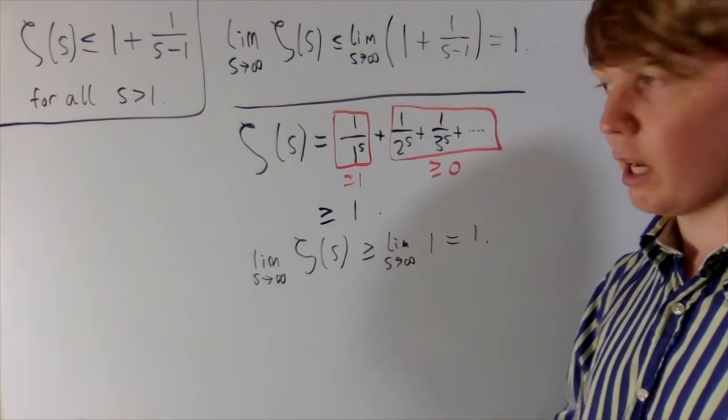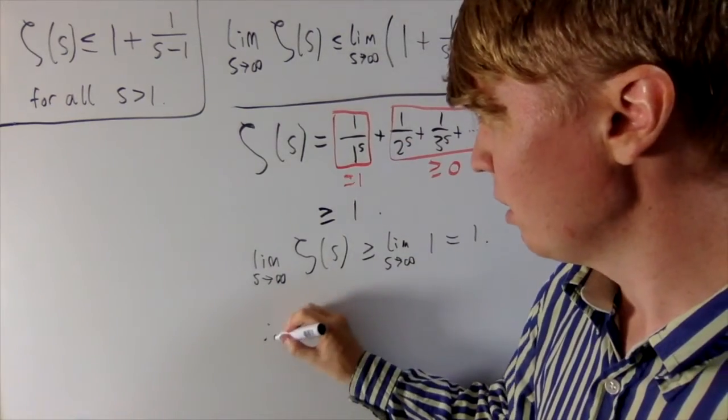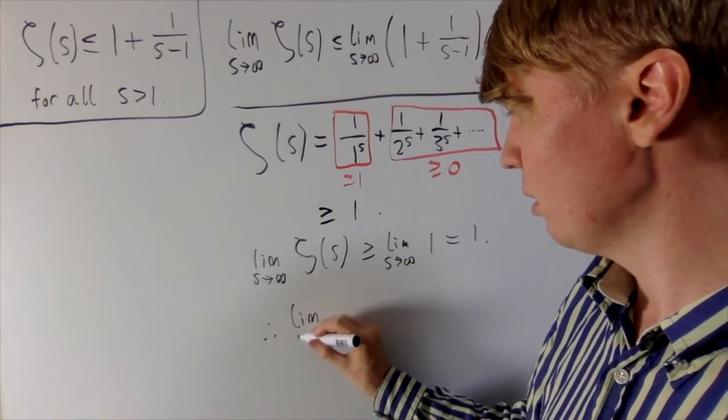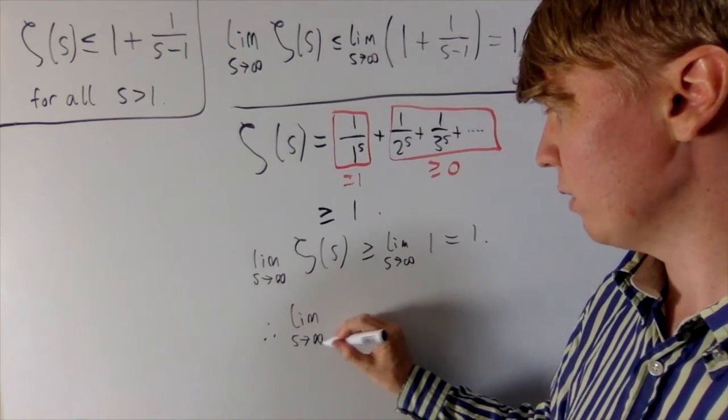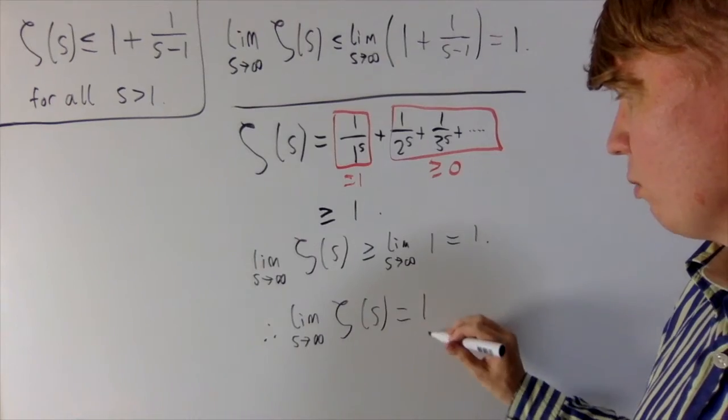And then we can conclude there, we've shown that the limit is greater than or equal to 1. We've also shown that it's less than or equal to 1. And then we can say that the limit, taking it as a real function, of the Riemann zeta function, is equal to 1.